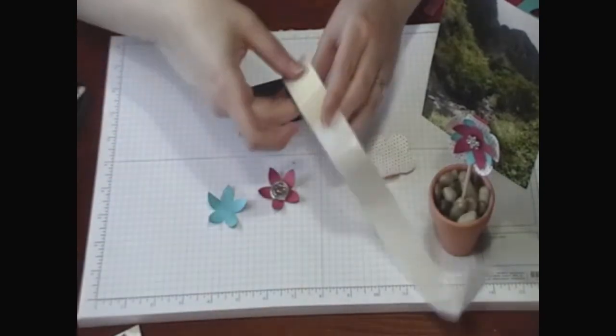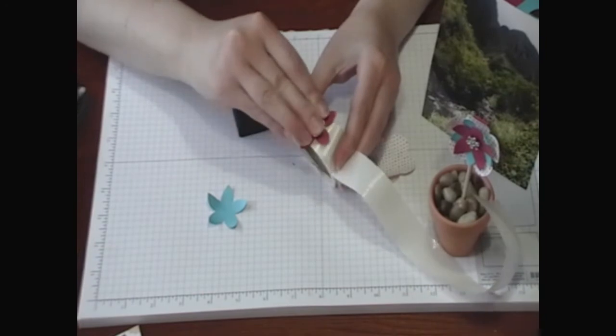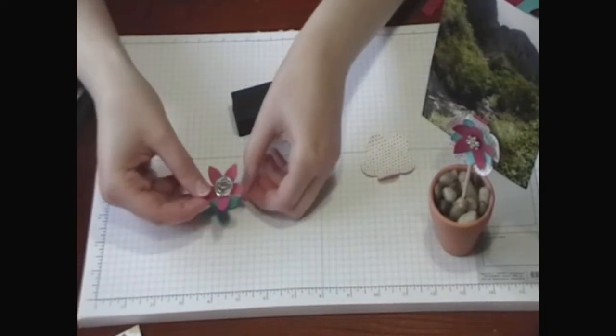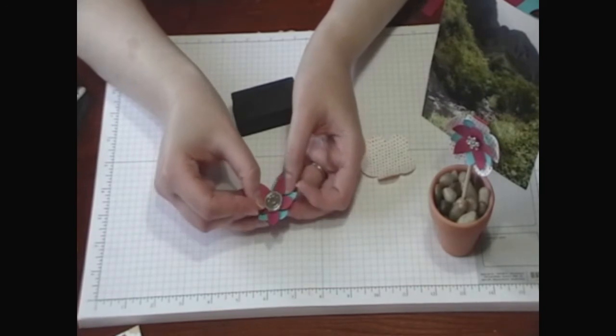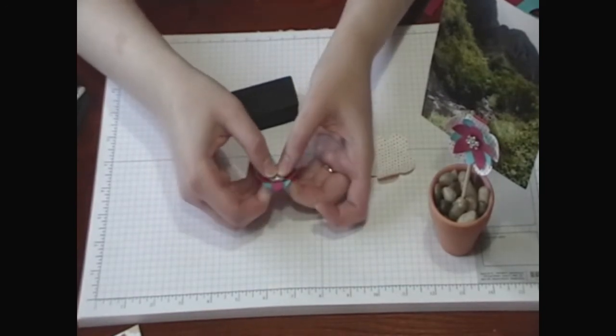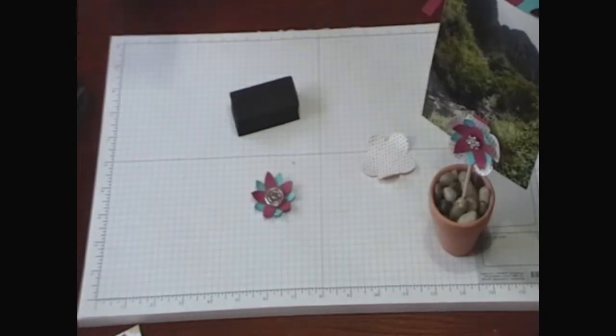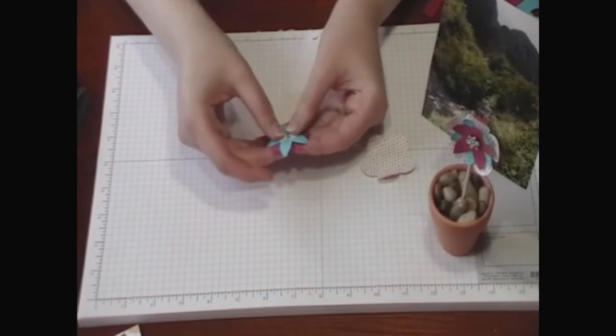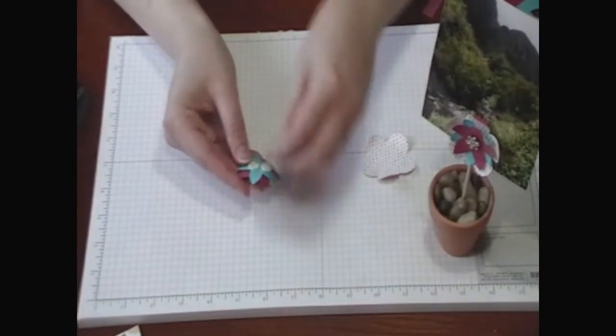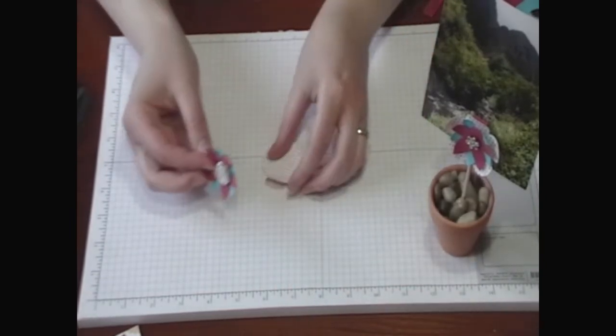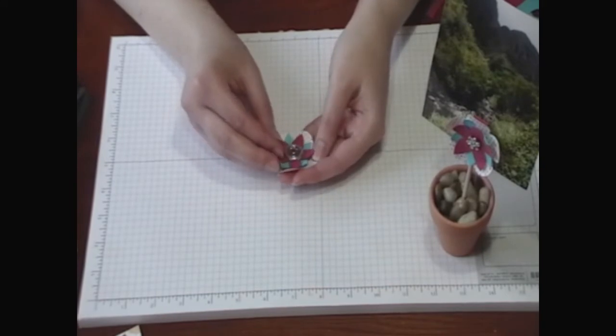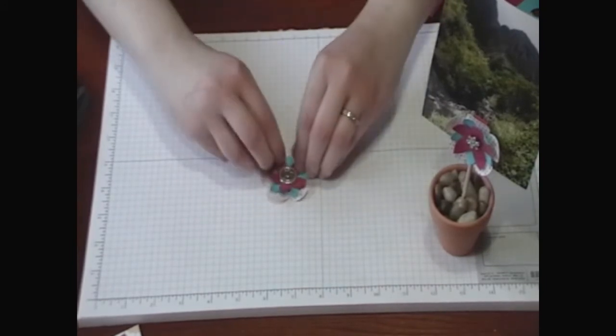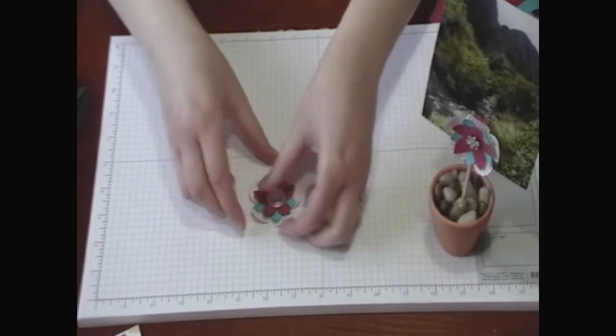Then I'm going to use a glue dot. And I'm going to place this, the pink flower, in the middle of the blue. I'm just going to offset the petals so that you have something that looks like this. Then I'm just going to place a couple of dimensionals on the back of here and place it in the middle of my large flower. Then I'm going to play with the leaves a little bit more to get them to stand up a little bit more. So that's the flower.